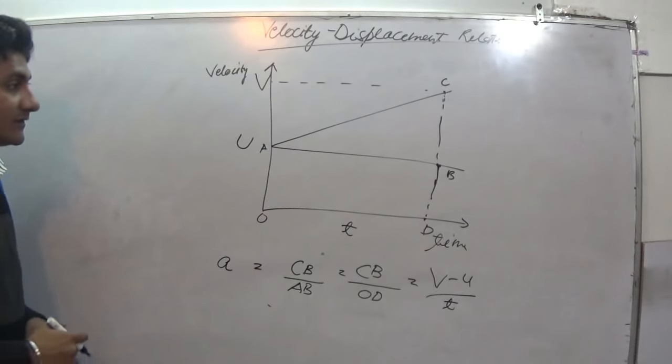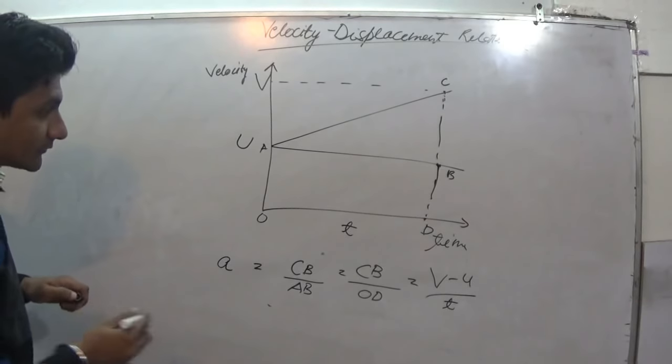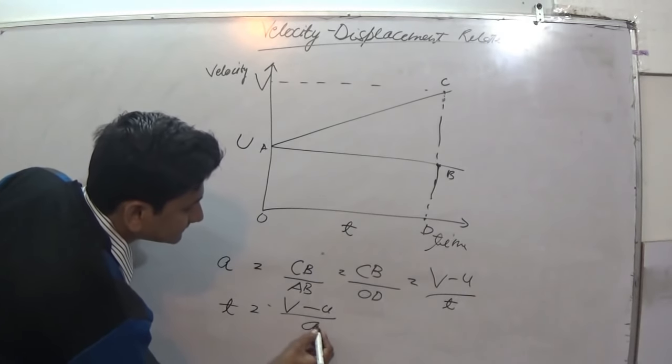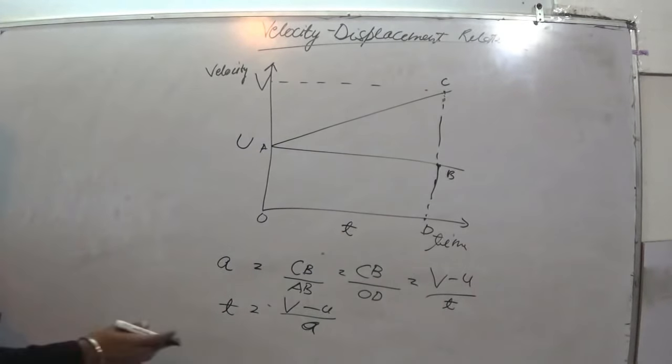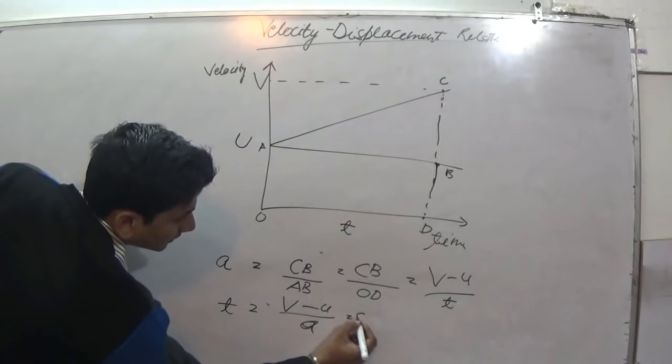Right, what we have from the other side, this is one equation we got regarding a. Or we can write it another way: t is equal to v minus u upon a. And now this t is equal to OD.